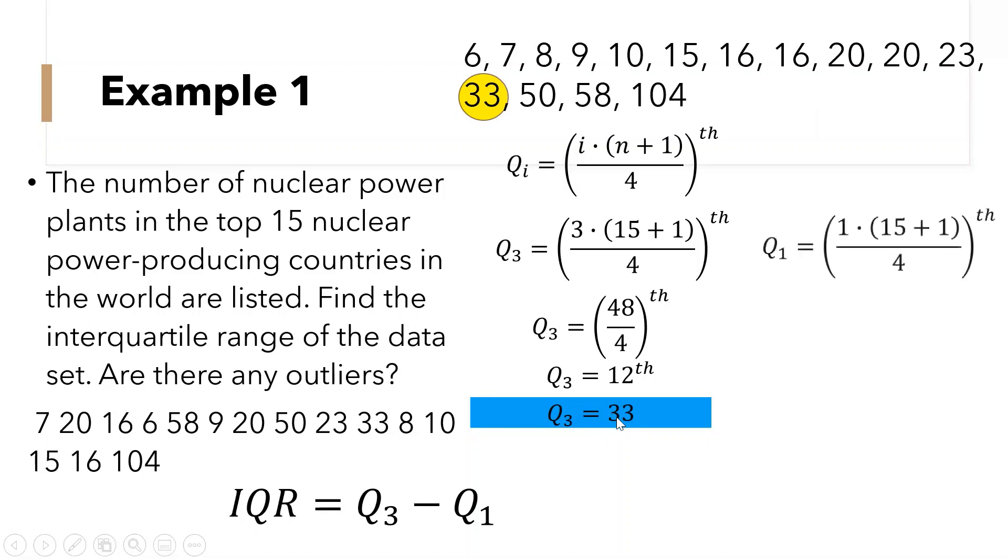So let us find the quartile 1. So quartile 1, our i is 1. So we have now 1 times the sum of 15 and 1 over 4. So we have 15 number of samples. So 15 plus 1 is 16 times 1 is 16. That is 16 over 4, and 16 divided by 4 is 4. The first quartile is the fourth data.